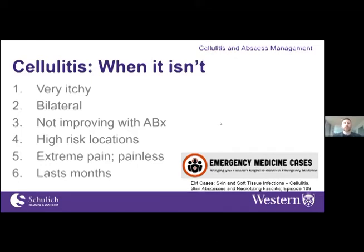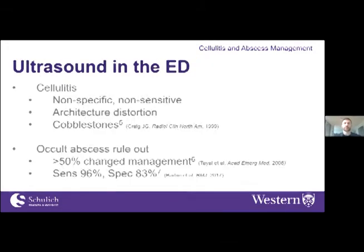EMRap gives a great pearl: six things suggesting it's NOT cellulitis. If it's very itchy, if it's bilateral, if it's not improving with antibiotics — think of another diagnosis. Think about higher-risk locations like the groin, perineum, or over joints that could represent necrotizing fasciitis or septic joint. If there's extreme pain or if it's painless think necrotizing infection. If it's lasting months and is chronic, it's probably not cellulitis.